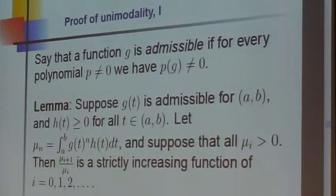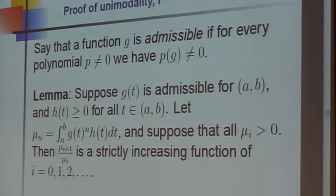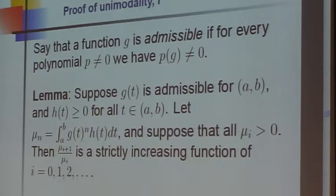That's phi M plus 1 over phi M is a monotonic function of N. To prove that, one has the following. Well, here's a weird condition called admissible. A function is admissible if for every polynomial p, we have p of g is not equal to 0.